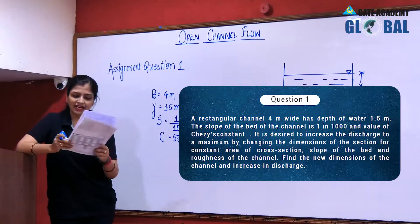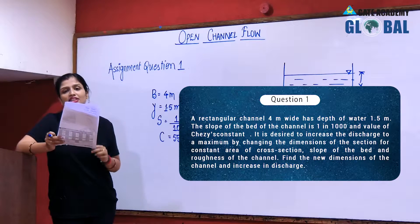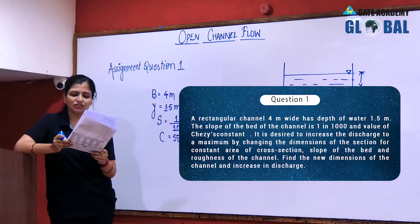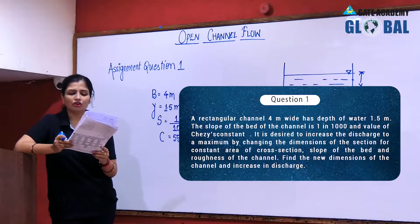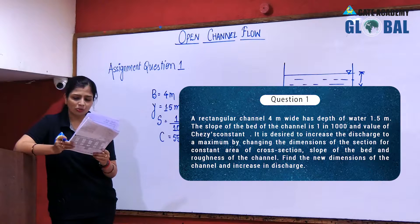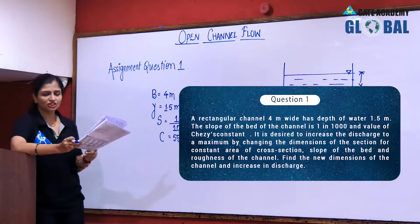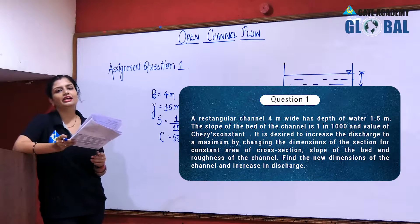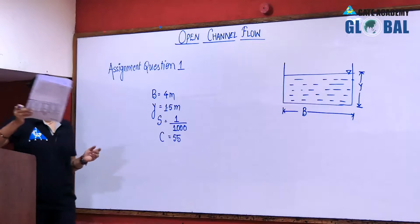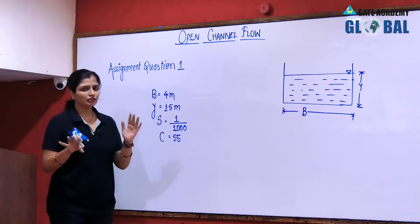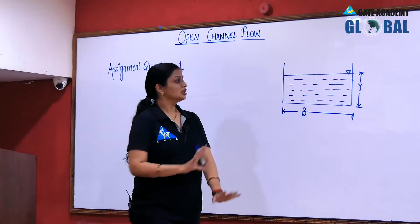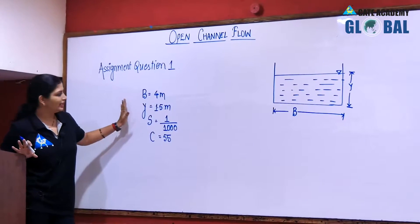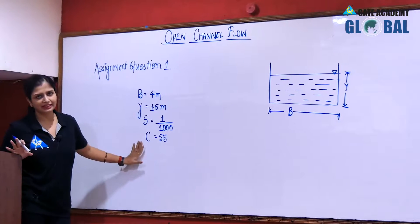It is desired to increase the discharge to a maximum by changing the dimensions of the section for constant area of cross section, slope of the bed, and roughness of the channel. Find the new dimensions of the channel and increase in discharge.